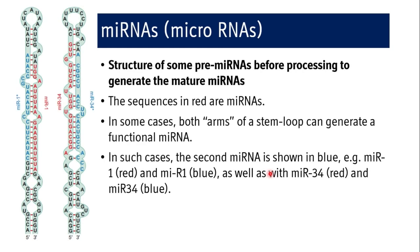These are examples of microRNAs showing the structure of some pre-miRNAs before processing to generate mature miRNA. The sequences in red are miRNAs — for example miR1 and miR34. In some cases both arms of the stem-loop can generate a functional miRNA depending on the complementary sequence. In such cases the second miRNA is shown in blue — miR1 in red and miR1 in blue, as well as miR34 in red and miR34 in blue. Both are potentially functional miRNAs depending on complementarity with the target gene.